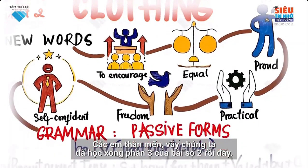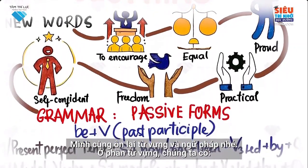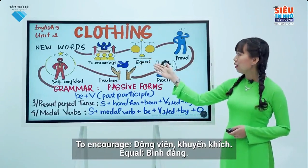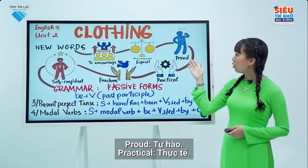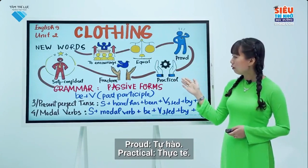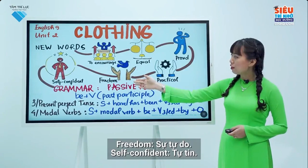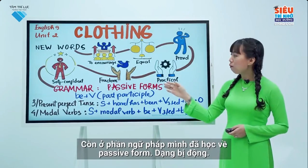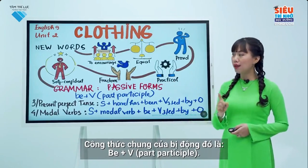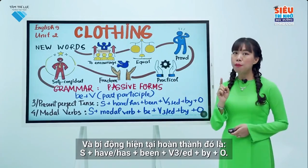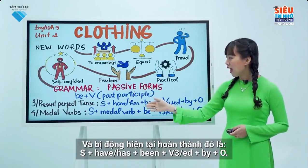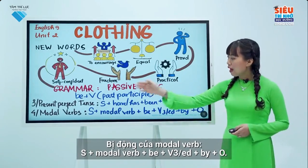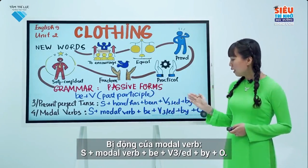My dear students, we have already learned Part 3 of Unit 2. Let's review: in vocabulary, we have to encourage, equal, proud, practical, freedom, self-confident. In grammar, the general structure of passive form is be + verb past participle. Passive in present perfect: subject + have/has + been + verb 3/-ed + by + object. Passive of modal verbs: subject + modal verb + be + verb 3/-ed + by + object.